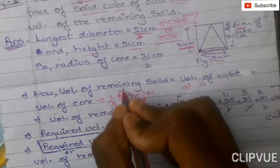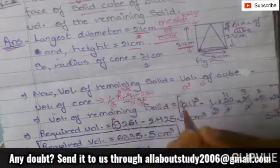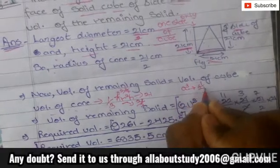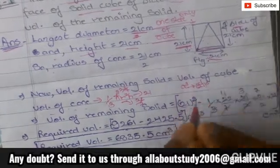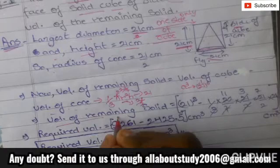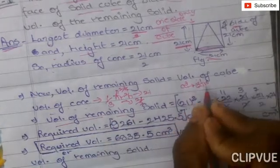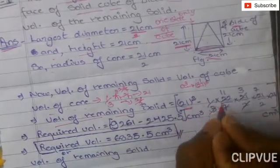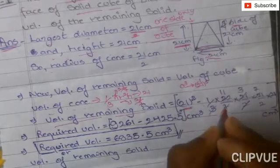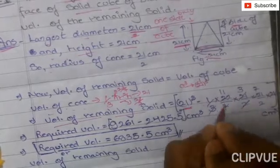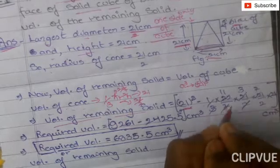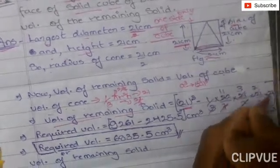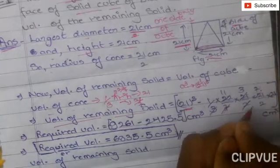The volume of the remaining solid will be equal to the volume of the cube minus the volume of the cone. The volume of the cube is a³, and the volume of the cone is (1/3)πr²h. We put π = 22/7, r = 21/2, h = 21, and a = 21, as given in the question.